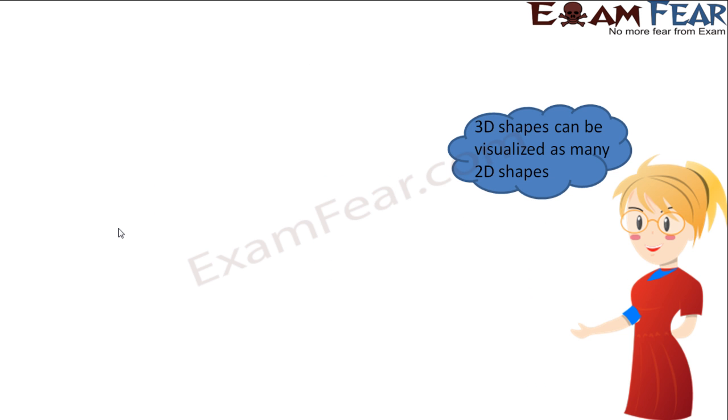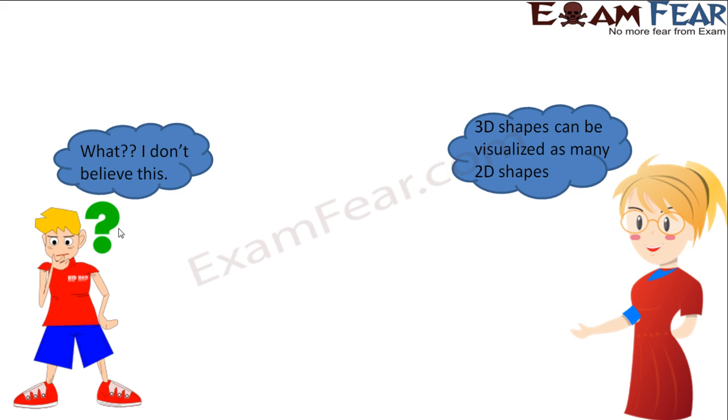Now the interesting part is that these 3D shapes can be visualized as many 2D shapes. That means multiple 2D shapes put together in some pattern gives rise to a three dimensional shape. Now it sounds weird I understand, but at the same time I gave you the example of the playing card. You remember one playing card is two dimensional but multiple playing cards forming a card tower, that's three dimensional.